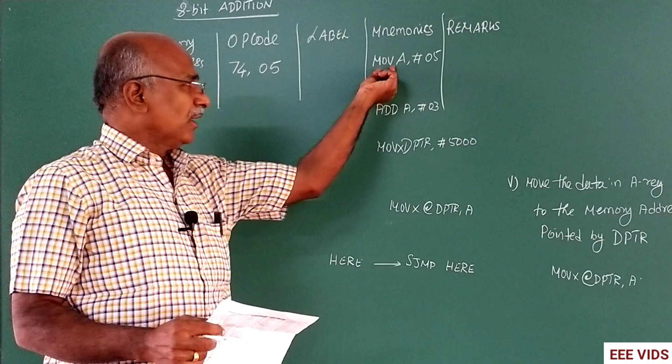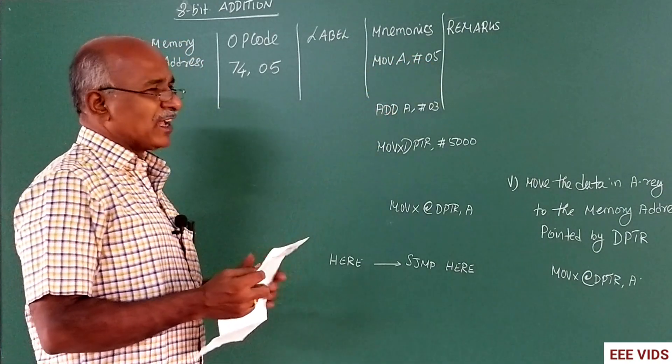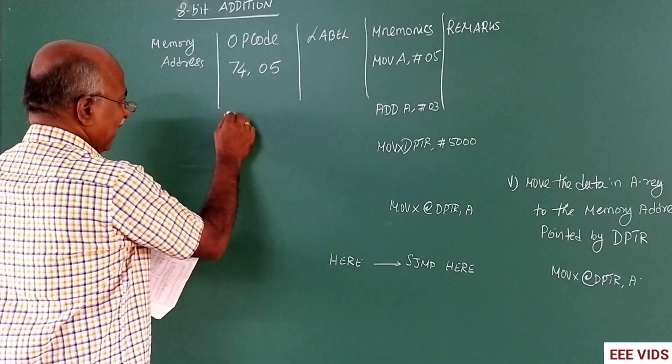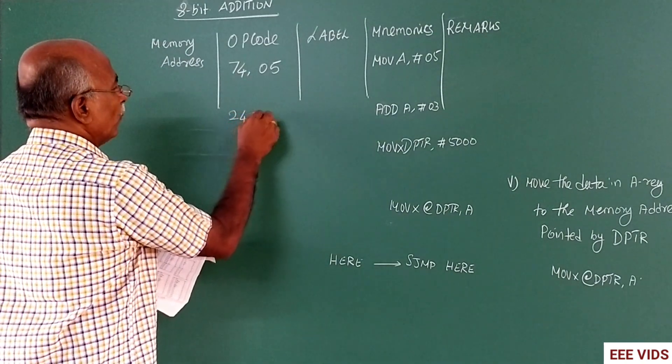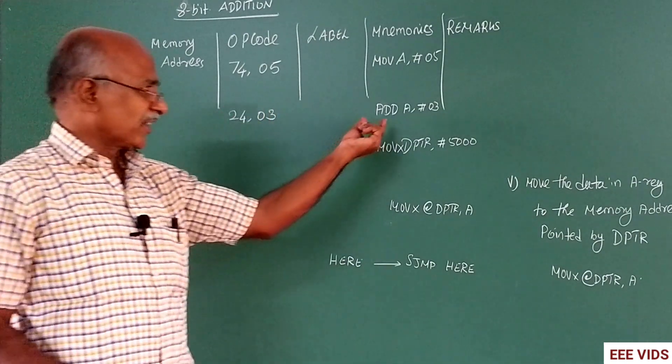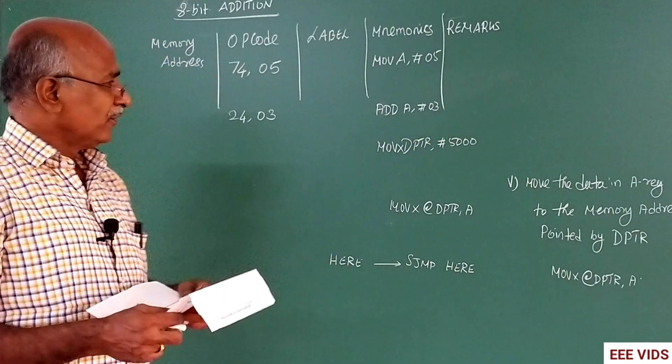Then instruction ADD A,03. ADD immediate. Opcode 24, data 03. Another 2-byte instruction. ADD A, opcode 24. 03 is the data.